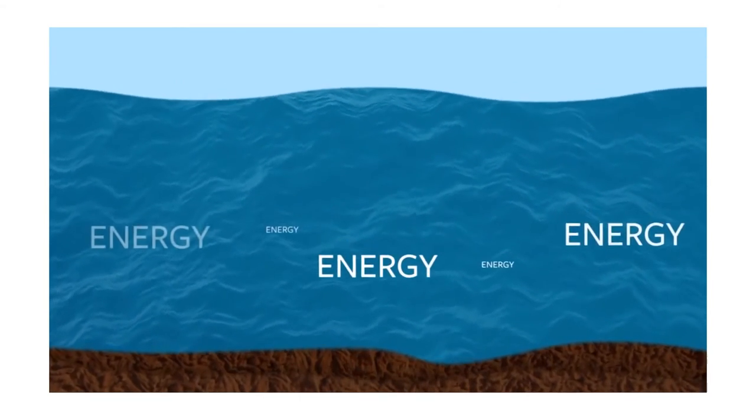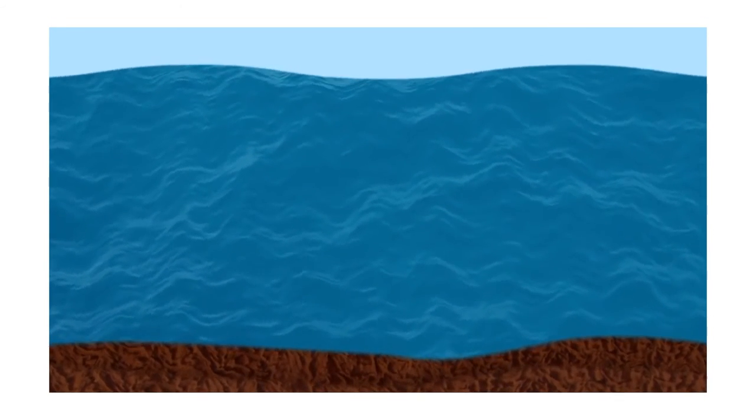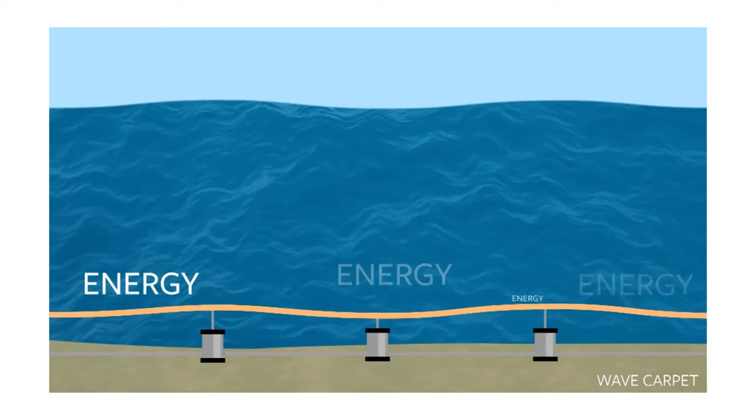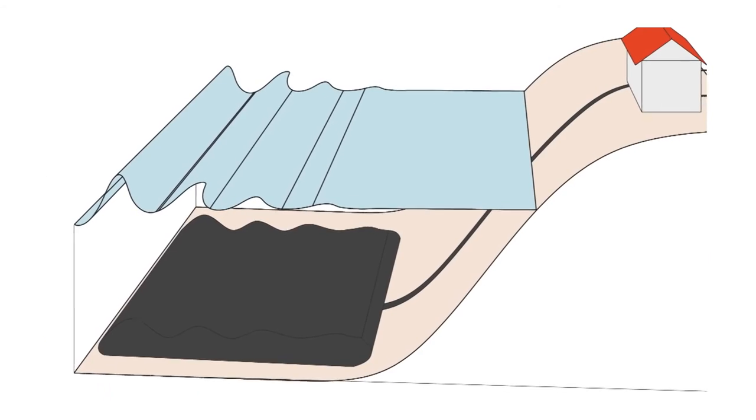The ocean has a lot of surface waves that go up and down and we can devise different systems that take advantage of being thrown up and down with the ocean currents and release that kinetic energy and turn it into electricity.